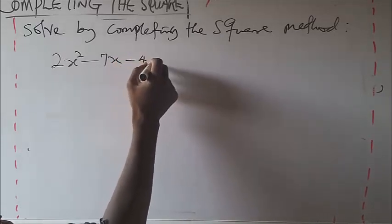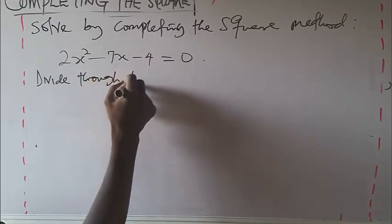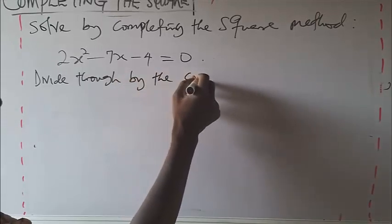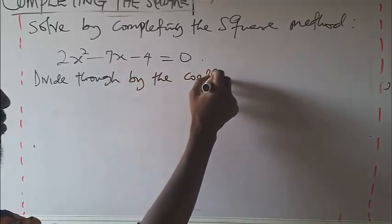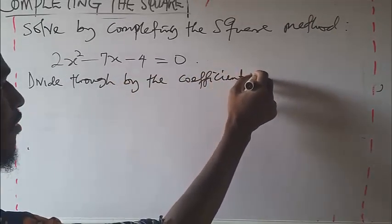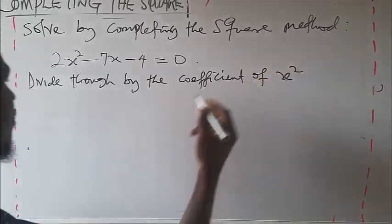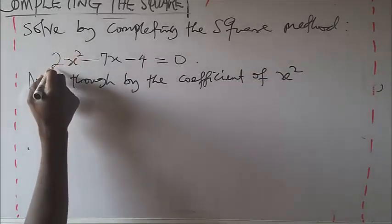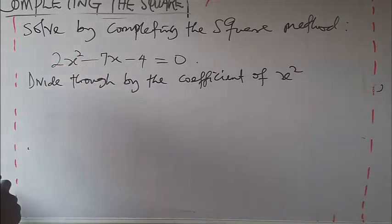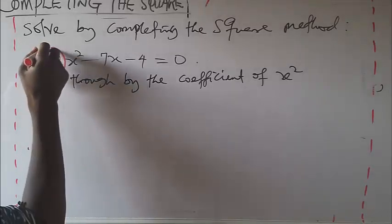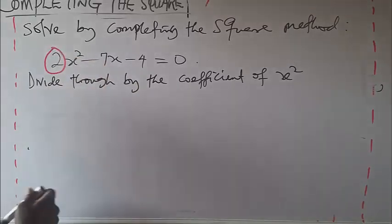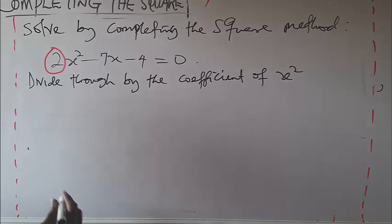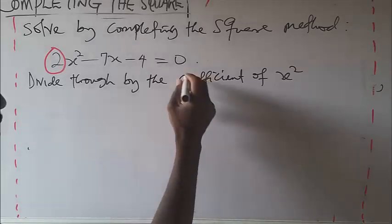Minus 4. Divide by the coefficient of x squared. Completing the square is about dealing with coefficients, and the first coefficient you need to deal with is the coefficient of x squared. The coefficient of x squared is 2, because 2 is the number just beside x squared. So this is telling you that you should divide through by 2.